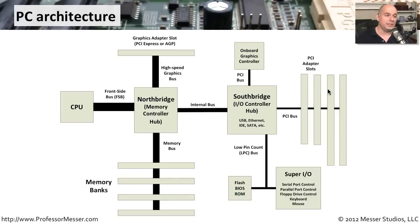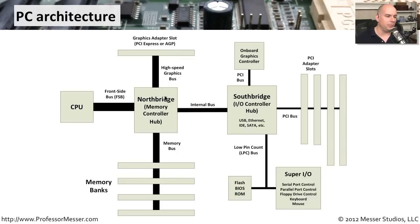Some differences to this might be something like a graphics adapter slot. If you have a PCI Express or an AGP slot, it may connect directly to the north bridge. So there is this separation inside of the computer where most of the time our slower devices are connected to the south bridge and the high speed devices are connected to the north bridge.